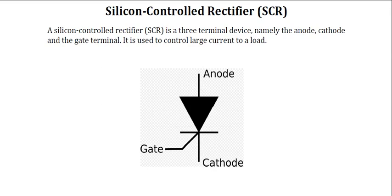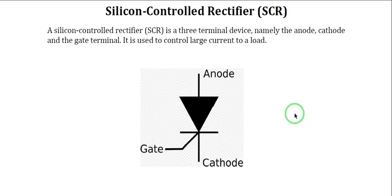Hello everyone, welcome to Industrial Electronics. Today we are going to discuss silicon control rectifier or SCR. A silicon control rectifier is a three terminal device, namely anode, cathode, and a gate terminal. It is used to control large current to a load.